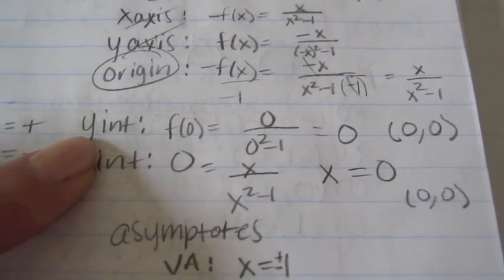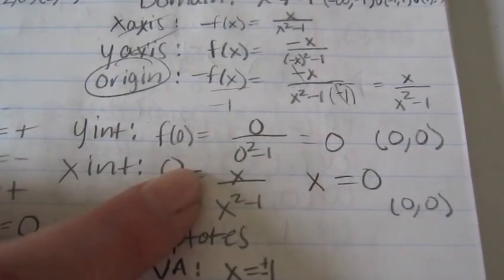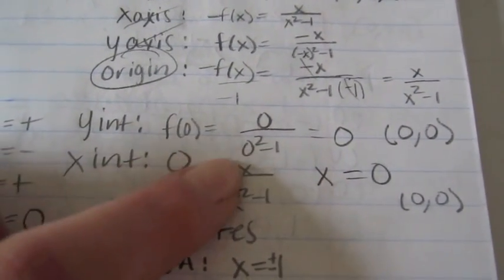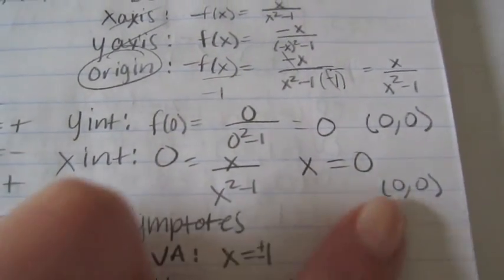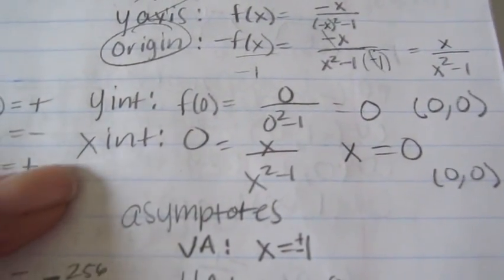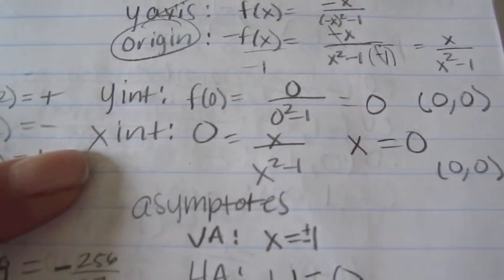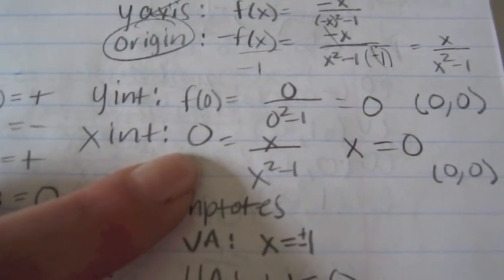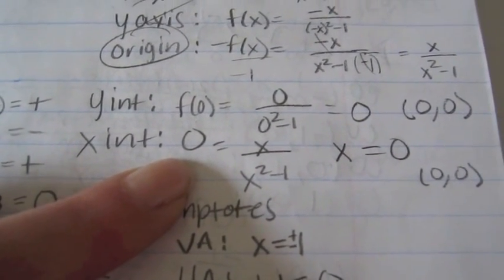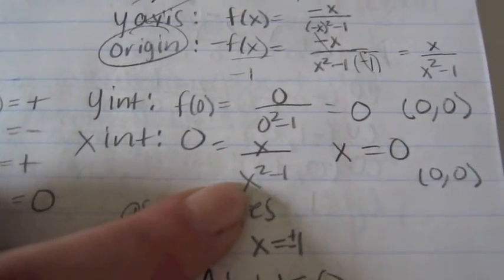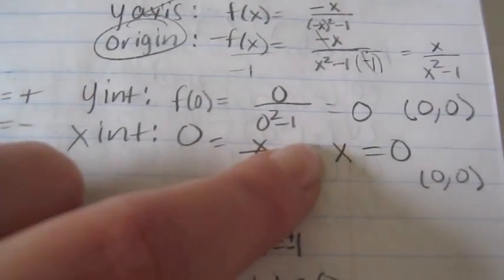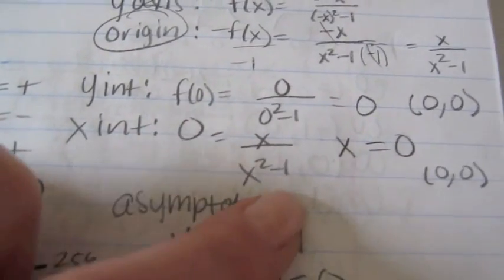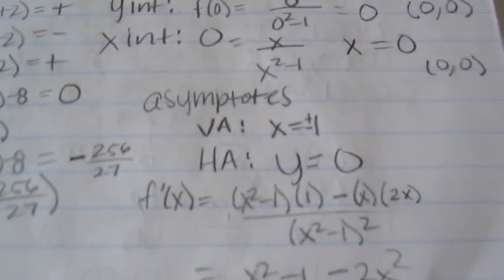The y-intercept is found by setting x = 0, which gives 0, so the intercept is (0, 0). The x-intercept is found by setting the entire function to 0 — multiplying both sides by the denominator also gives x = 0. So (0, 0) is both the x- and y-intercept.